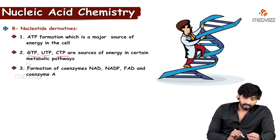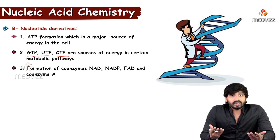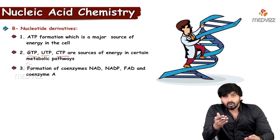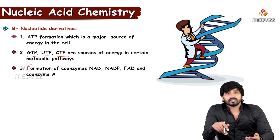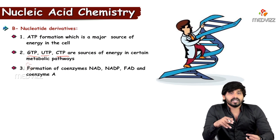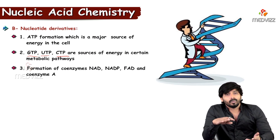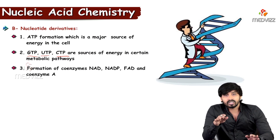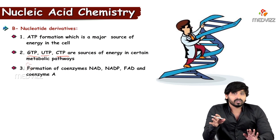Other nucleotides such as GTP, UTP, and CTP are energy sources in certain metabolic pathways. In the TCA cycle, succinate dehydrogenase converts GDP to GTP. UTP is required for glycogen synthesis, and CTP is required for pyrimidine synthesis.